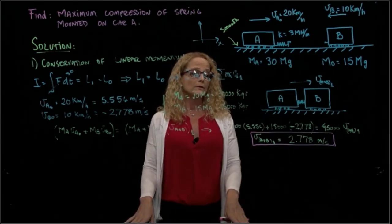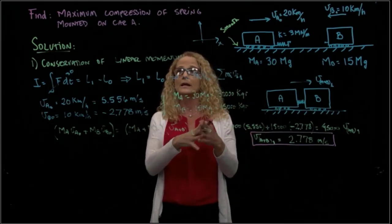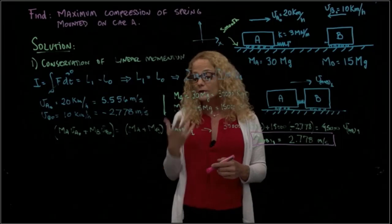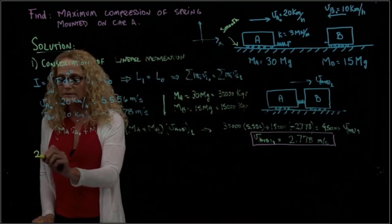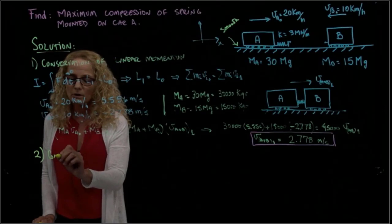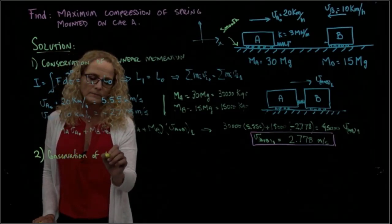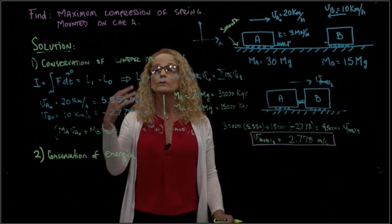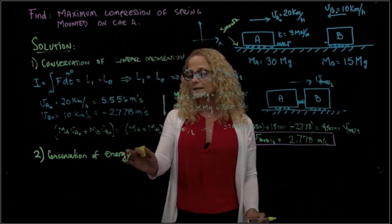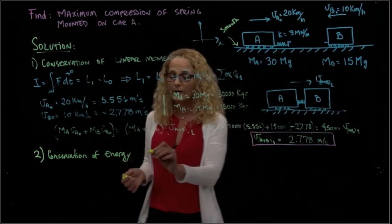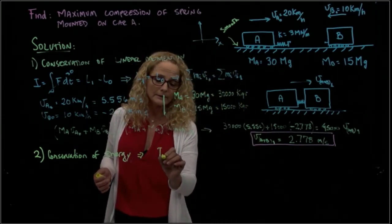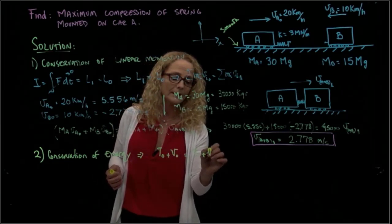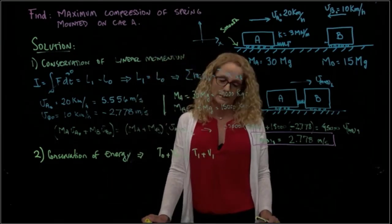We found the velocity when they attach, but we have not yet found what we are asked for — the maximum compression of the spring. For that, we use our second equation: conservation of energy. Since we don't have any non-conservative external forces, the initial energy, kinetic plus potential, equals the final energy, kinetic plus potential.